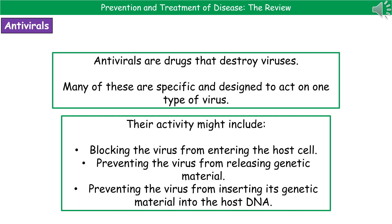The second type of chemical we're going to look at are antivirals. Antivirals will destroy viruses — hence the name. Many of these are specific and designed to act on one type of virus. The way they kill the virus could be by blocking it from entering the host cell, because as we've already looked at, if a virus can't get into the host cell, it can't replicate.